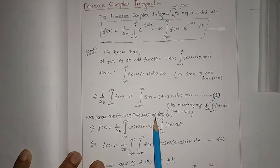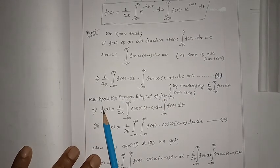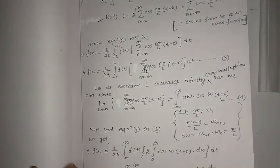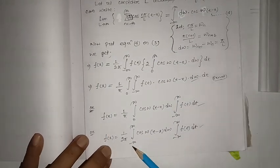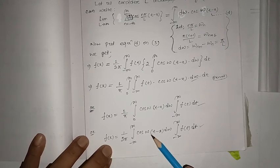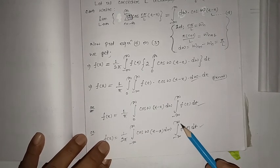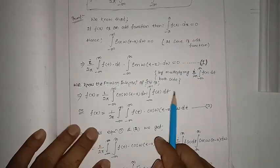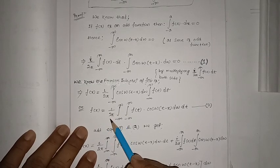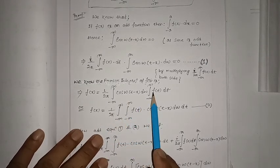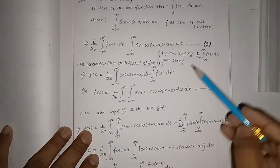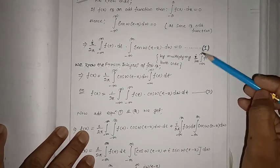We also know the Fourier integral of f(x): f(x) = one by two pi, integral minus infinity to plus infinity of cos(ωt - x) dω, times integral minus infinity to plus infinity f(t) dt, which is the same as one by two pi double integral of f(t) cos(ωt - x) dω dt. Let this be equation number two.